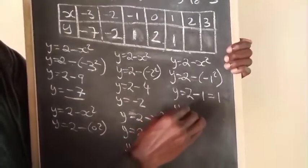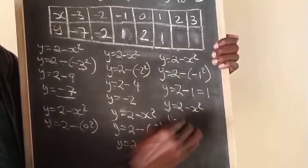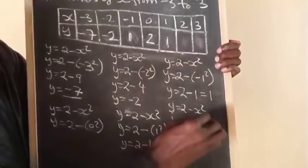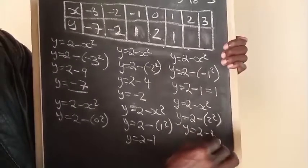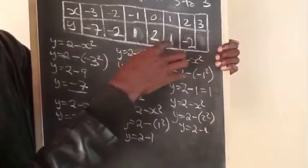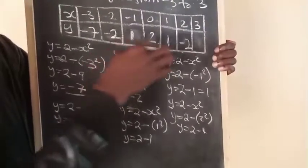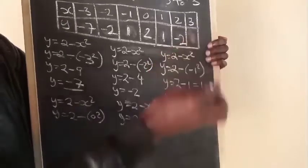Then to the next one: y equals 2 minus x squared. Y equals 2 minus 2 squared. Y equals 2 minus 4. The answer is minus 2.